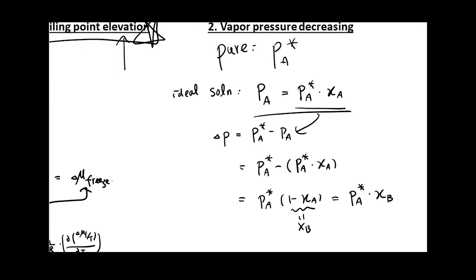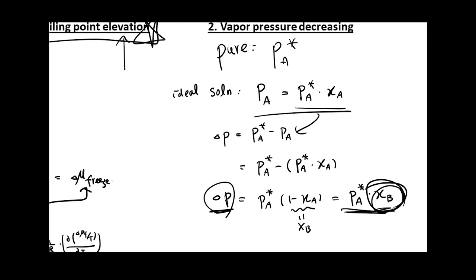So the change in vapor pressure is related to the concentration of your solute. A is the solvent and B is the solute. The larger xB is, the bigger the difference between the pure and non-pure solution. Since the pure solvent has the highest vapor pressure, adding more solute decreases the vapor pressure of the solvent.